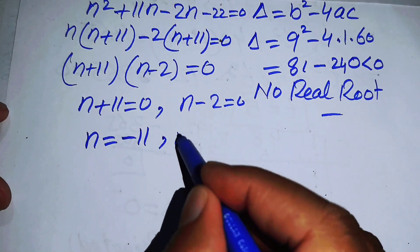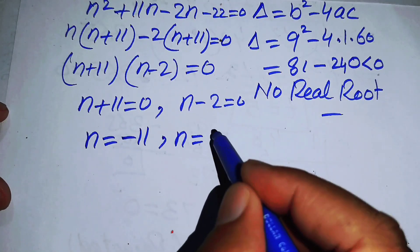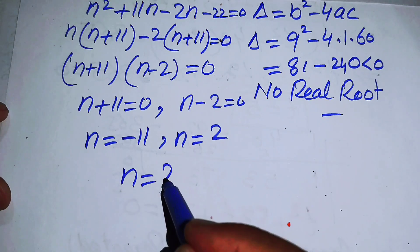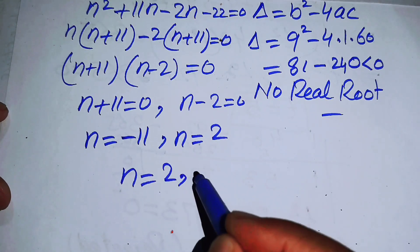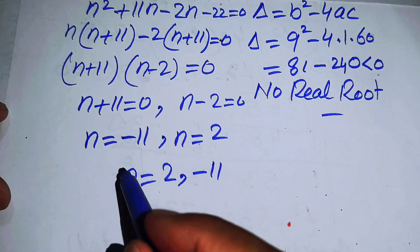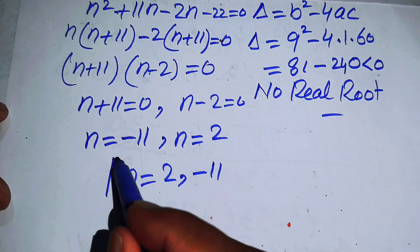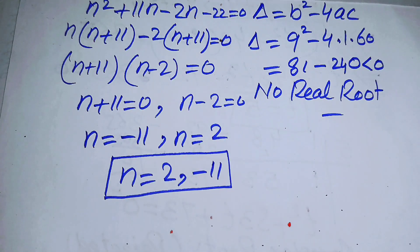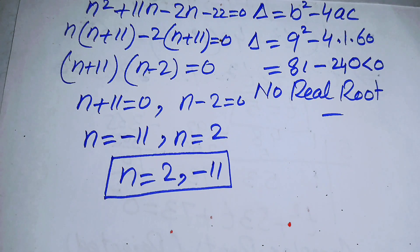Finally, we get two real roots: n = −11 and n = 2. So the final answer to this problem is n = 2 and n = −11. Thank you so much for watching this video — please subscribe to my channel for more exciting videos.